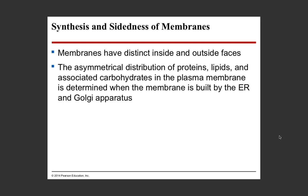Our membranes have sidedness - an internal side and an external side. We've been talking about things happening on the external side, like cell-to-cell recognition, and transmembrane proteins that span both sides. There is an asymmetrical distribution of all these components. It's not even on either side, and that's important because for cell-to-cell communication, you have to have the recognition carbohydrates on the outside - if they're on the inside, other cells can't detect them. The ER and Golgi apparatus help to synthesize proteins and lipids, then package and send them where they're supposed to go.